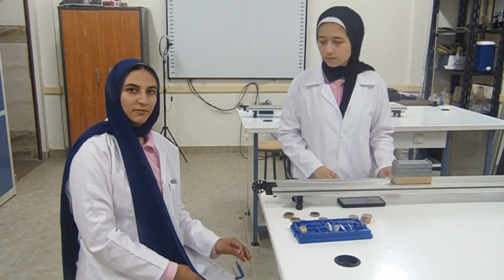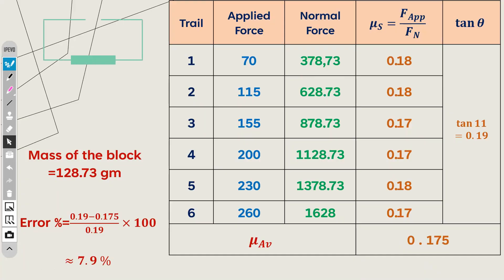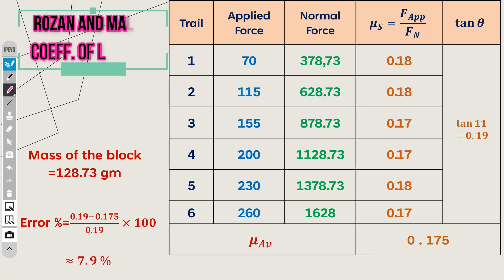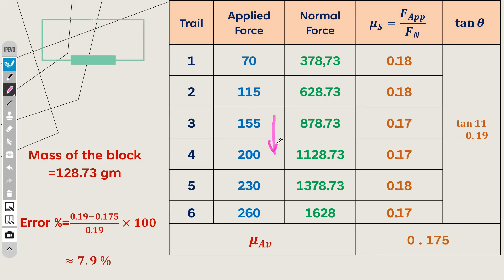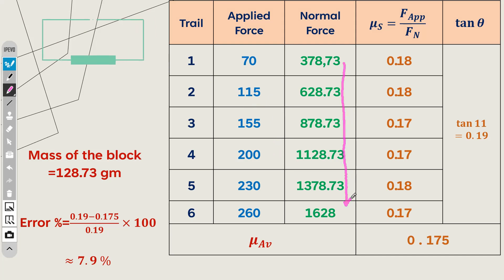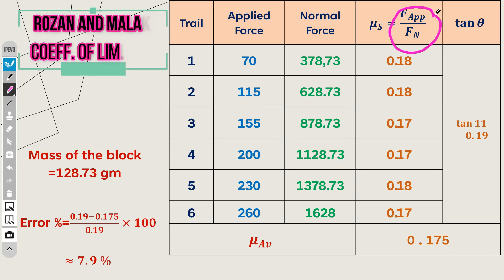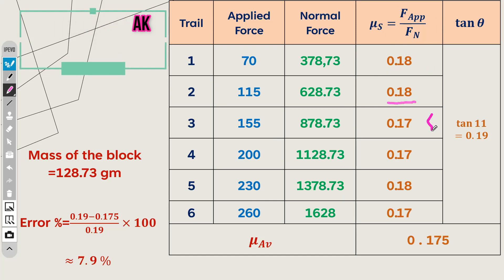At the end of the experiment, we find that every time we measure the friction — the mu s — it is equal to the previous time. In trial 1, the applied force is 70 grams and in trial 2, the applied force is 115 grams, and so on. The normal forces are listed in a column, and mu s — which equals applied force over normal force — in trial 1 gives mu s equals 0.18, and in trial 2 it is still 0.18, and so on.